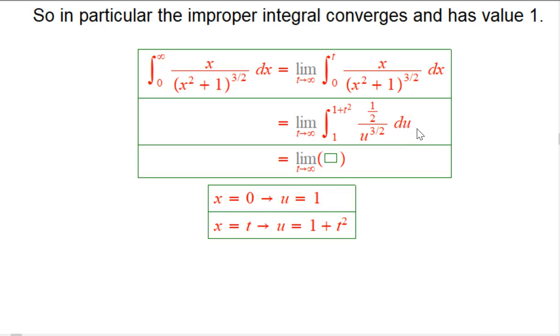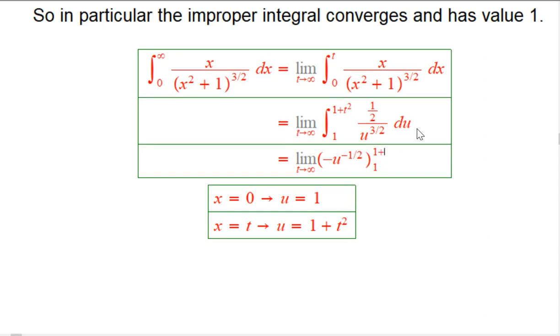And you get back to exactly what we had before. This is going to be minus u to the minus 1 half because it cancels. Very similar. And then just evaluate it at 1 and 1 plus t squared.